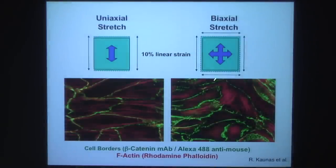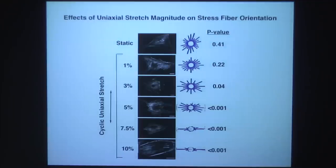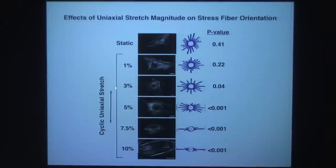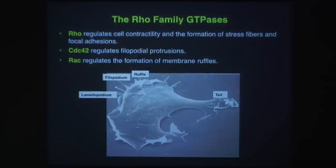With biaxial stretch — without a definitive direction — the stress fibers and cells do not orient or align. If you induce uniaxial stretch with different magnitudes and look at the polar plot of stress fiber orientation: in static condition there is no orientation; at 1% stretch it is not significant; at 3% stretch there is borderline significance; beyond that it is definitely significant — by 10% stretch it is definitely oriented.